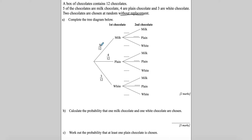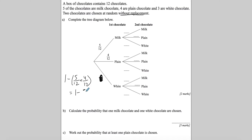The probability for milk is 5/12, plain is 4/12, and white is 3/12. Sometimes in exam questions they give you one or two branches but leave one missing. Remember that all probabilities on a branch must add up to one, so you can find the missing value using 1 minus the others. Here: 1 − (5/12 + 4/12) = 1 − 9/12 = 3/12.